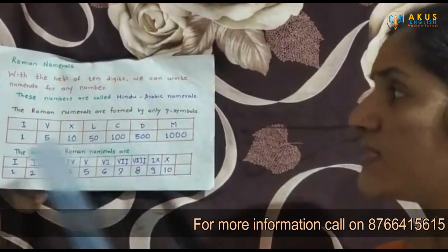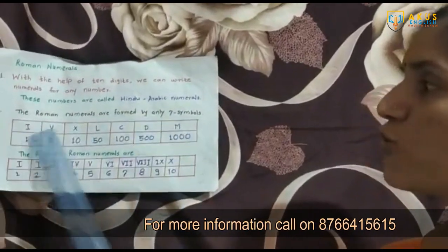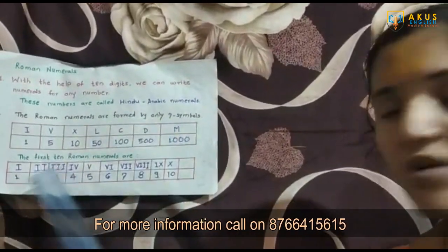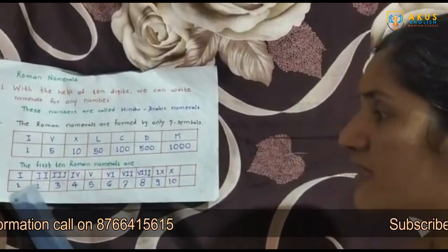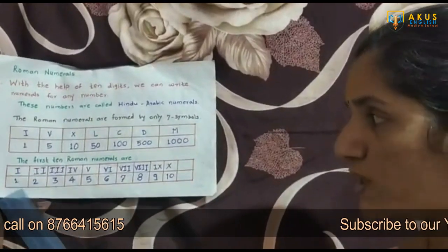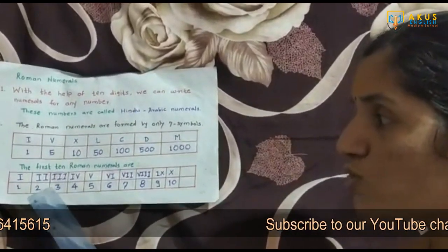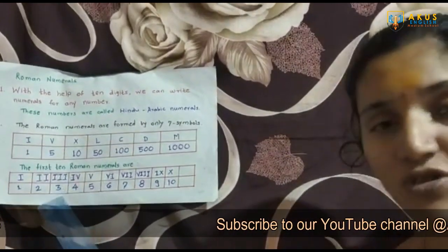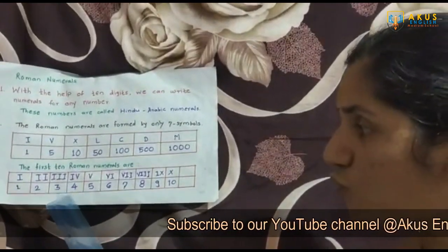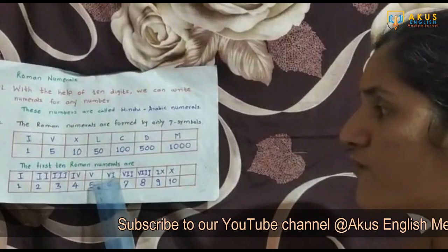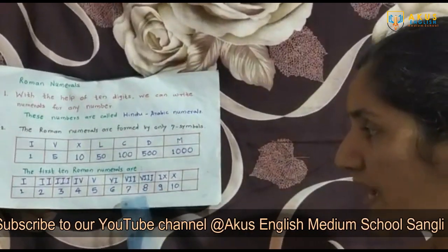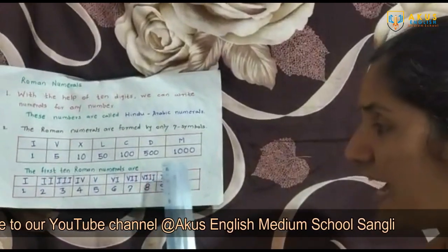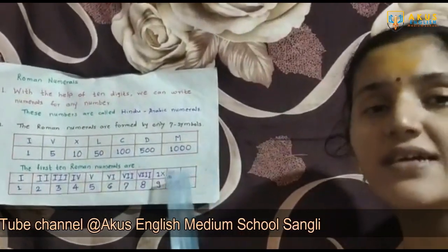In this chart, they have also shown the first 10 Roman numerals: I for 1, II for 2, III for 3, IV for 4, V for 5, VI for 6, VII for 7, VIII for 8, IX for 9, and X for 10. So these are the first 10 Roman numerals.